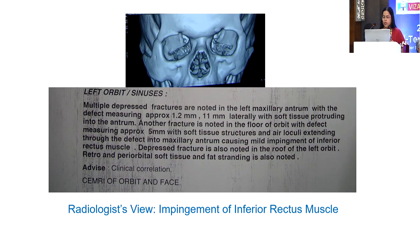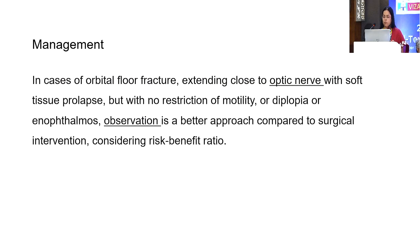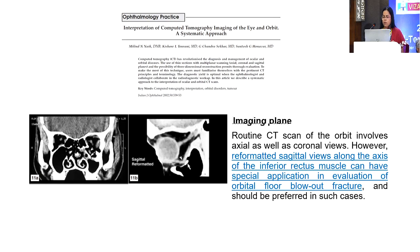On serial sections of the CT scan, there was an obvious comminuted floor fracture and the radiologist noted mild impingement of the inferior rectus muscle. However, on examination the ocular movements were full and free. To confirm, we performed the forced duction test, which was free. Since the vision was 6/6 and apart from enophthalmos there were no complaints, we decided to proceed without surgery and chose observation.